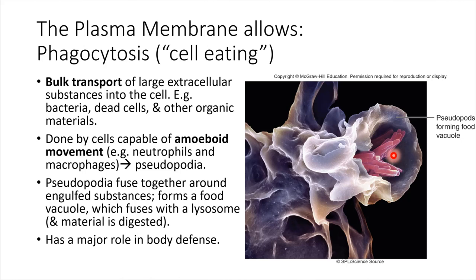The pseudopodia — this is something that only some cells can form; not all cells can do this. But some of the cells of the immune system — we'll be coming back to this in a later chapter — some of the cells of the immune system are really good at performing phagocytosis.